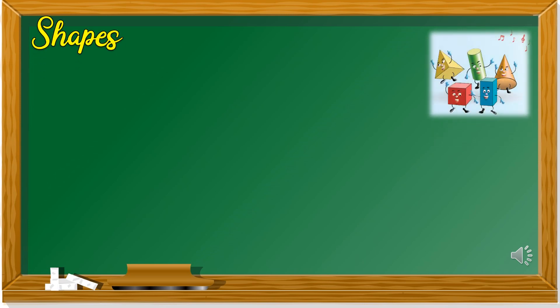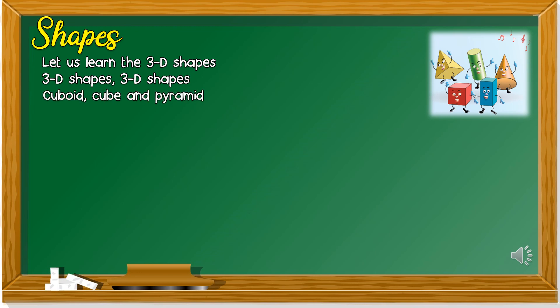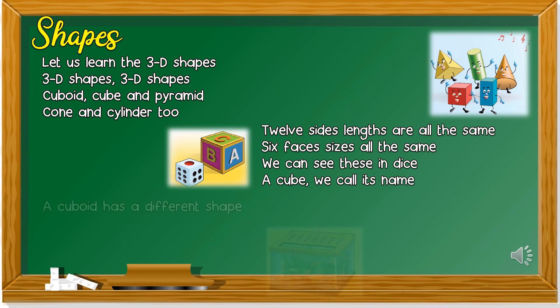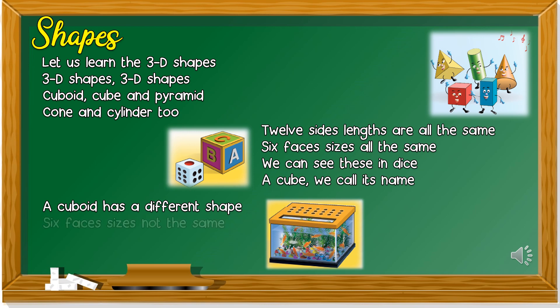Before we start our lesson, let's learn a song. Let us learn the 3D shapes, 3D shapes, 3D shapes. Cuboid, cube and pyramid, cone and cylinder too. Twelve side lengths are all the same, six faces sizes all the same. We can see these in dice, a cube we call its name. A cuboid has a different shape, six faces sizes not the same. Has squares and also rectangles, has twelve sides too.